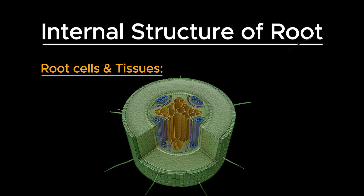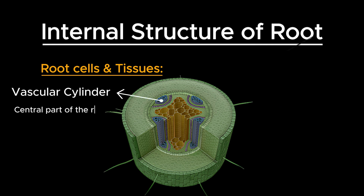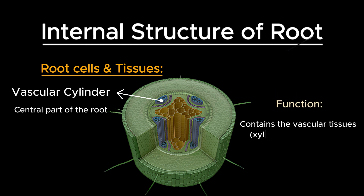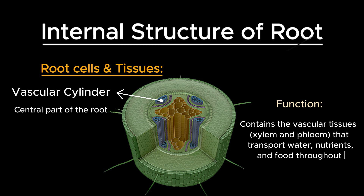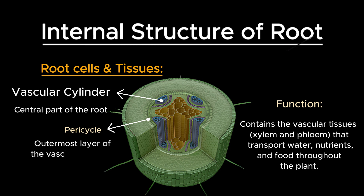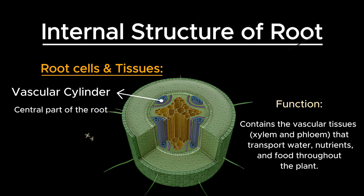Next to the endodermis is the vascular cylinder. It is the central part of the root, surrounded by the endodermis. The vascular cylinder contains the vascular tissues that transport water, nutrients, and food throughout the plant. The pericycle is the outermost layer of the vascular cylinder, just inside the endodermis. It is involved in the formation of lateral roots.